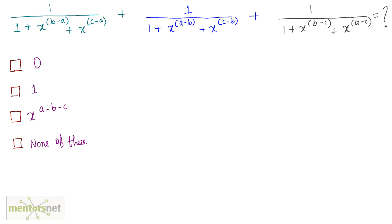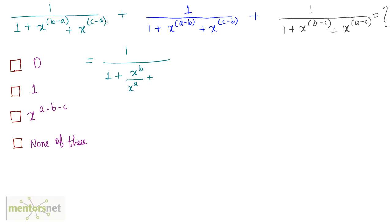So I can write this expression as: the first part, 1 upon 1 plus x raised to b minus a, can be written as x raised to b divided by x raised to a, plus x raised to power c minus a, which I can write as x raised to power c by x raised to power a.